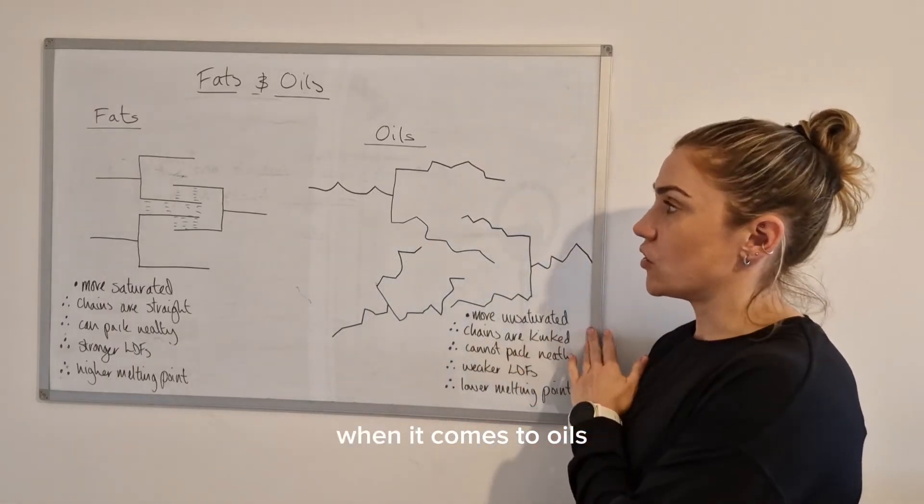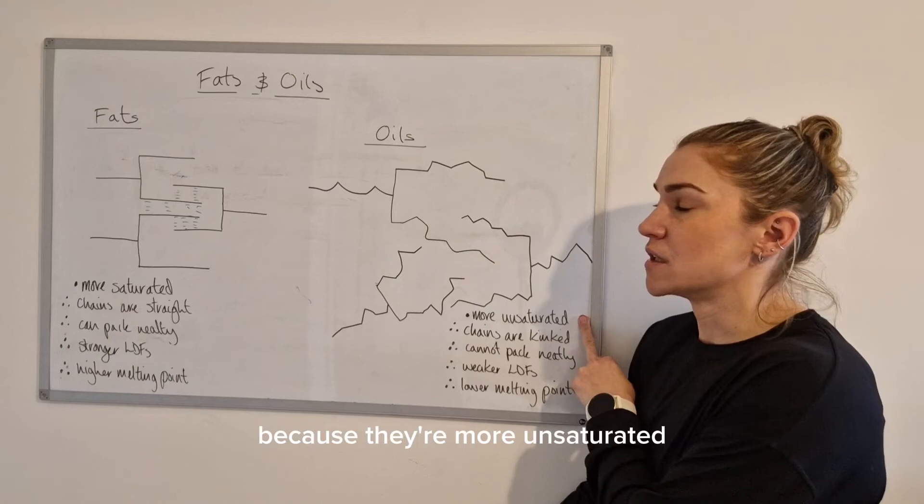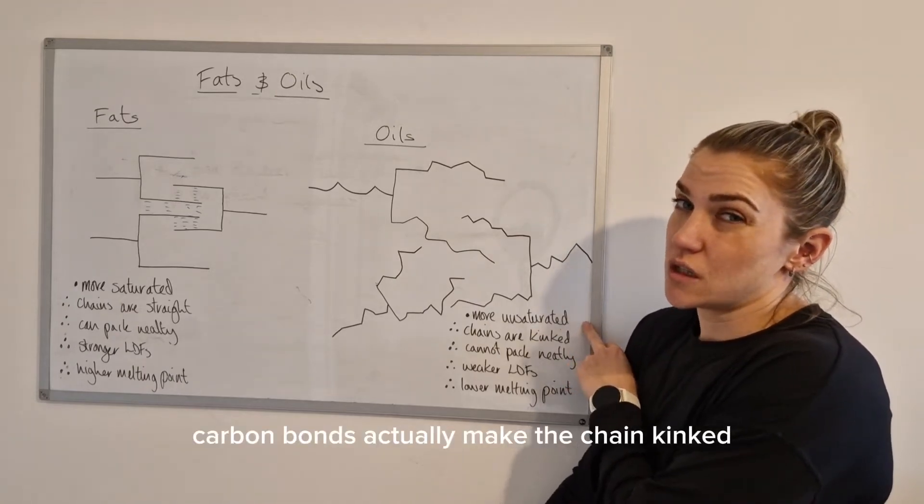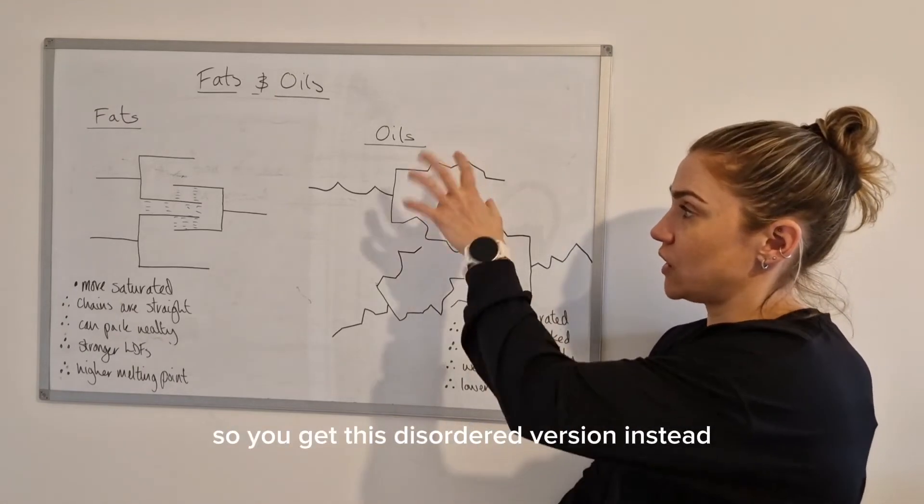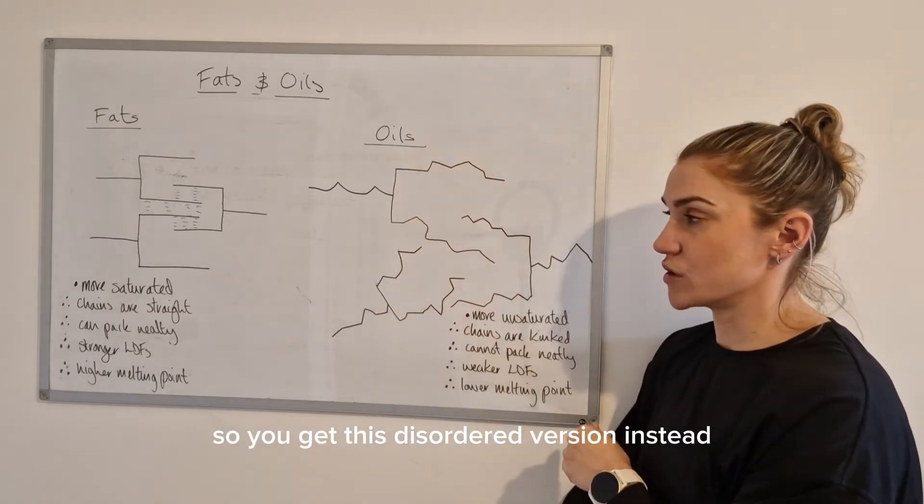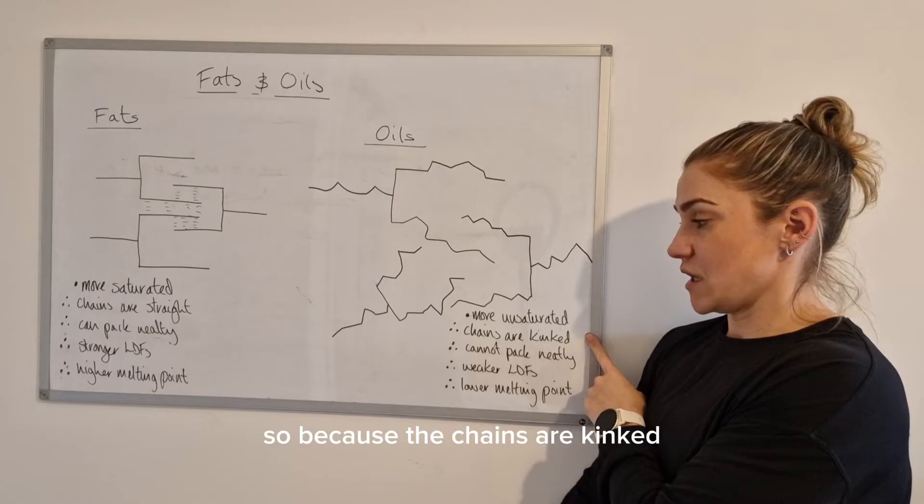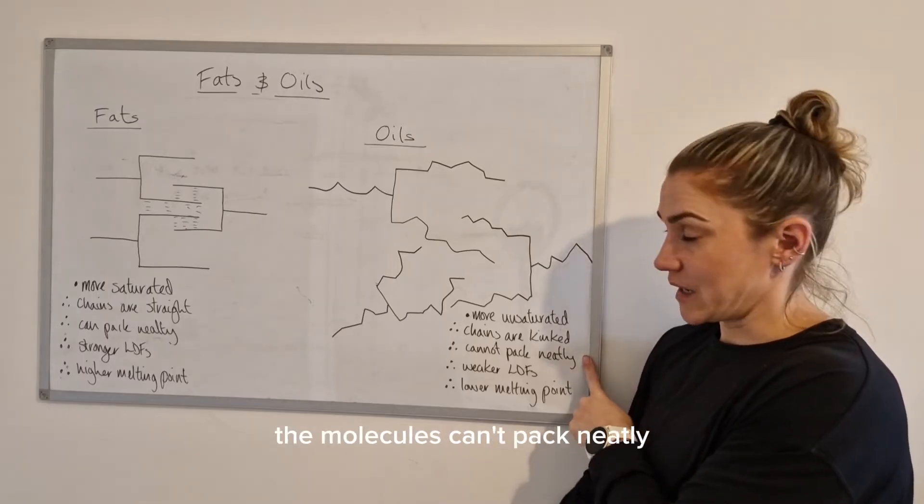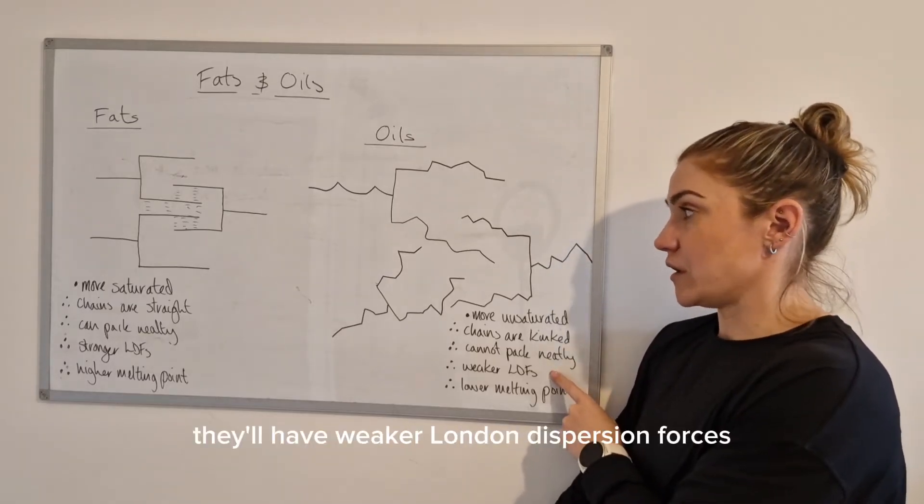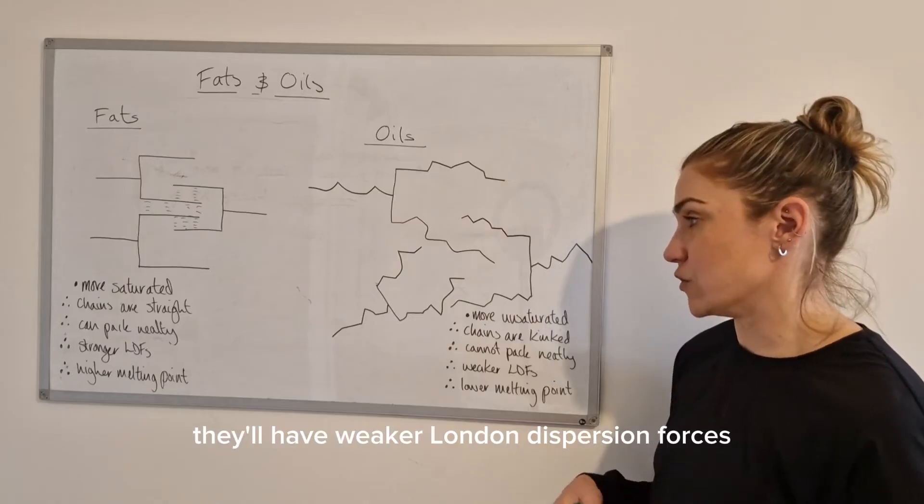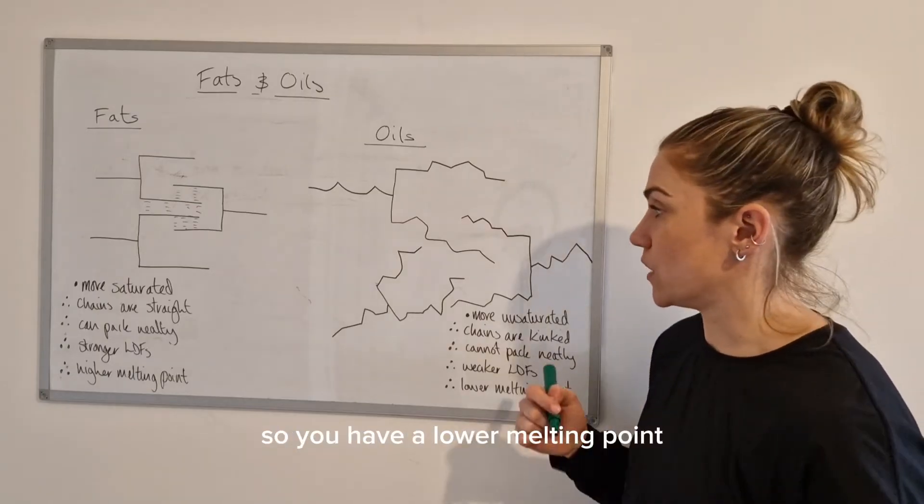When it comes to the oils, because they're more unsaturated, the double carbon to carbon bonds actually make the chain kinked, so you get this disordered version instead. Because the chains are kinked, the molecules can't pack neatly and therefore they'll have weaker London dispersion forces, so you have a lower melting point.